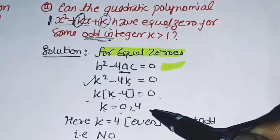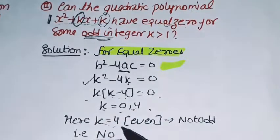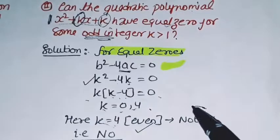The value of k is zero or four. Here, k equals 4 is even, not odd.